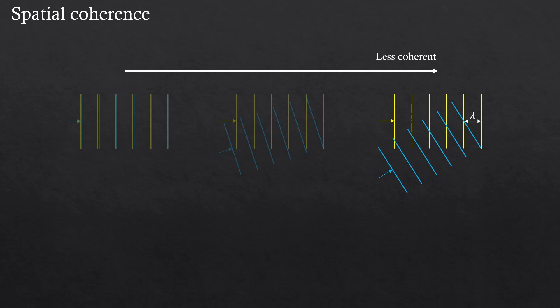Now they are even less spatially coherent. You can see that the coherence length is shorter, which makes sense. Because again, the coherence length tells us how far the waves remain spatially coherent. Short coherence length means poor spatial coherence.